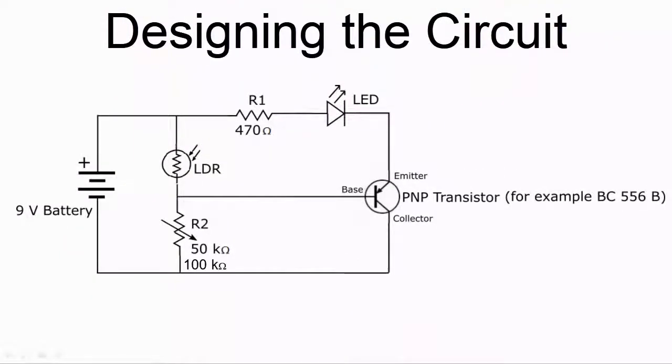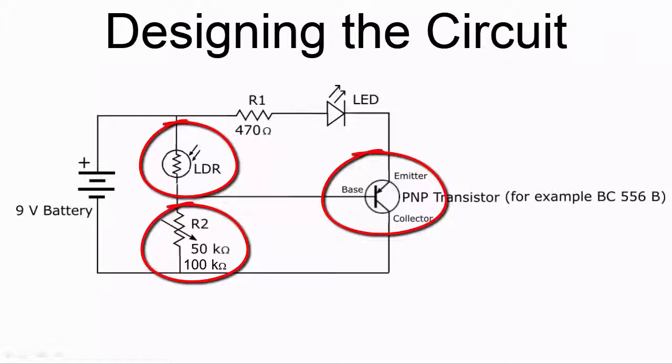So here is the circuit. The three interesting components in the circuit are the transistor, which behaves like an on-off switch, the LDR, which determines the voltage applied to the base of the transistor, which either switches it on or off by controlling the flow of current from the emitter to the collector.